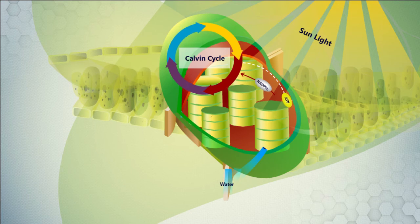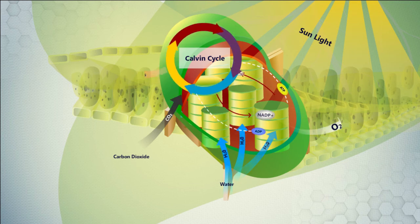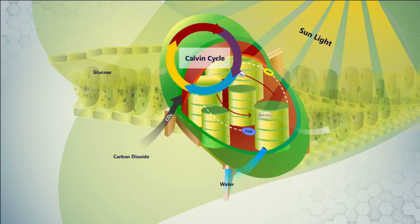The second reaction occurs in the stroma, the fluid-filled area of a chloroplast. In this reaction, the energy from ATP and NADPH are used to fix carbon dioxide.